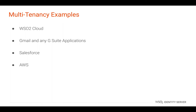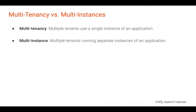This also means that if you are the one providing a service to tenants, you do not have to spawn a separate deployment for each tenant — you can simply reuse the existing deployment. Comparing Multi-Tenancy with Multi-Instance Architecture: with Multi-Tenancy you run the same application instance, whereas with Multi-Instance you run multiple instances of the same application.